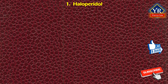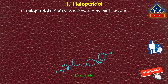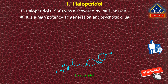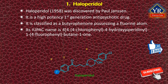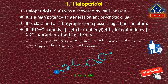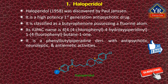Moving on to the individual fluorobutyrophenones, we begin with haloperidol. Haloperidol was discovered in 1958 by Paul Janssen. It is a high-potency traditional first-generation antipsychotic drug and one of the most commonly used antipsychotic medications used worldwide. It is classified as a butyrophenone possessing a fluorine atom. Its IUPAC name is 4-[4-(4-chlorophenyl)-4-hydroxypiperidinyl]-1-(4-fluorophenyl)-butan-1-one. It is a phenylbutylpiperidine derivative with antipsychotic, neuroleptic, and antiemetic activities.